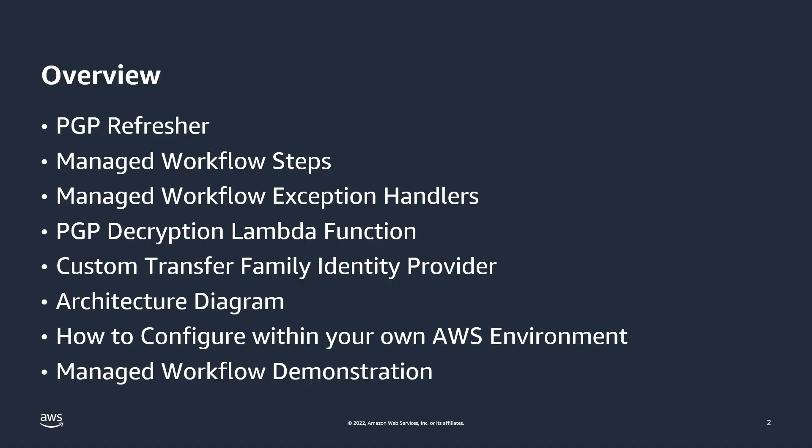Here's a quick overview of what I'll be covering today. I'll start with a short refresher on what PGP is and its typical use cases. I'll walk through each step of the Managed Workflow and explain how the PGP decryption Lambda function works. I'll also go over the custom Transfer Family Identity Provider and explain why you may want to use it over traditional managed users. I'll then explain the architecture diagram and finish with a configuration walkthrough and demo.